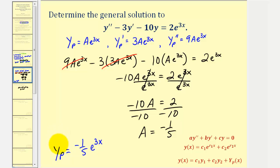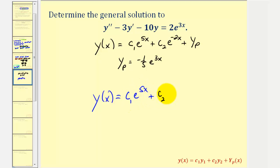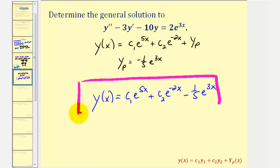Now that we've found Yp, a particular solution, we have enough information to determine the general solution to the original non-homogeneous differential equation. We already found the first two terms from the corresponding homogeneous equation, and now we've found Yp. So the general solution is y(x) = c₁e^(5x) + c₂e^(-2x) − (1/5)e^(3x). I hope you found this helpful. We'll take a look at another example in the next video.